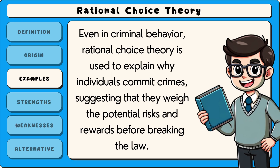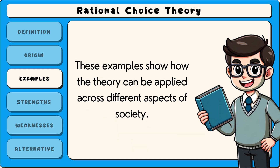Even in criminal behaviour, rational choice theory is used to explain why individuals commit crimes, suggesting that they weigh the potential risks and rewards before breaking the law. These examples show how the theory can be applied across different aspects of society.